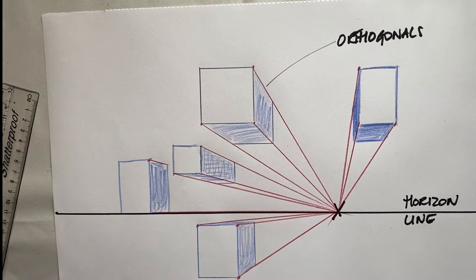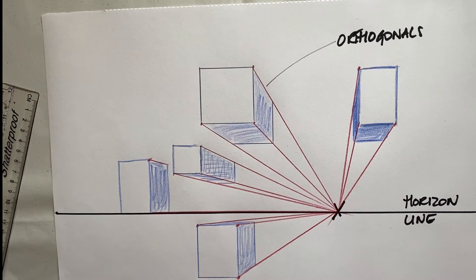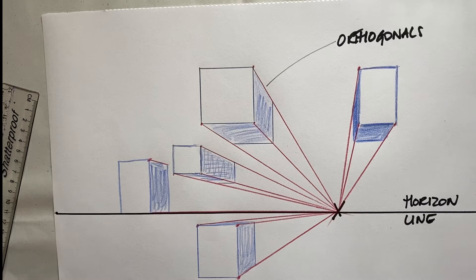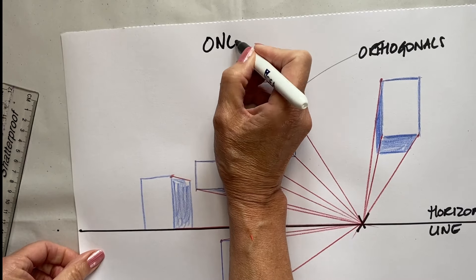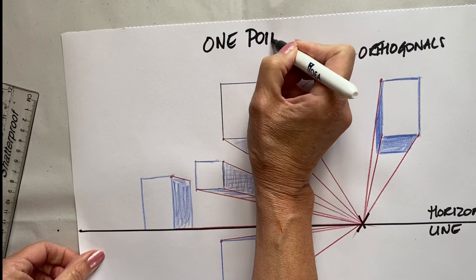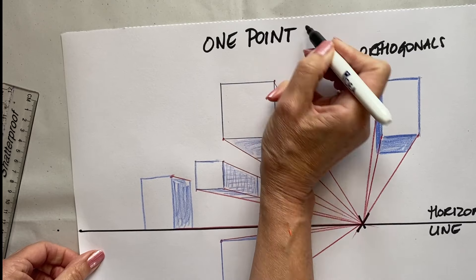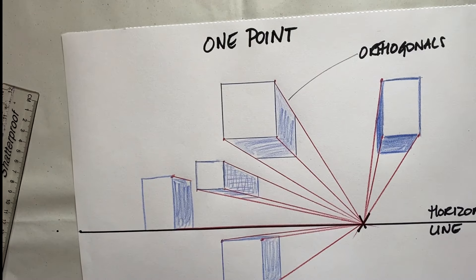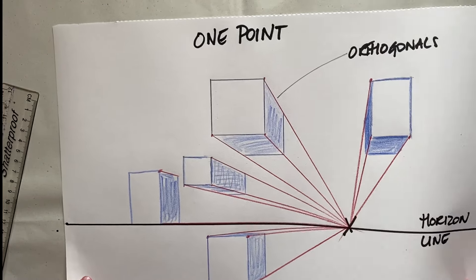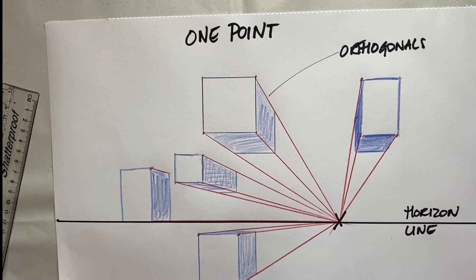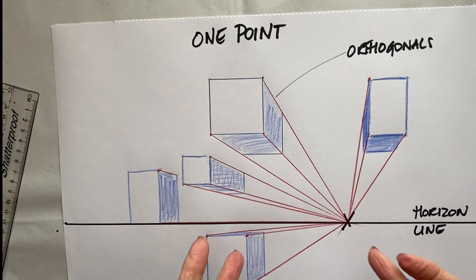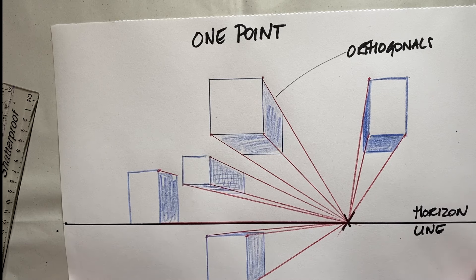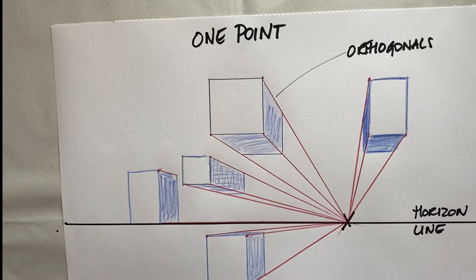I hope you're getting an idea of what one point perspective looks like. It's all fine just having our little squares, but how is this going to work in a drawing and what can we do with it? That's going to be the next stage.